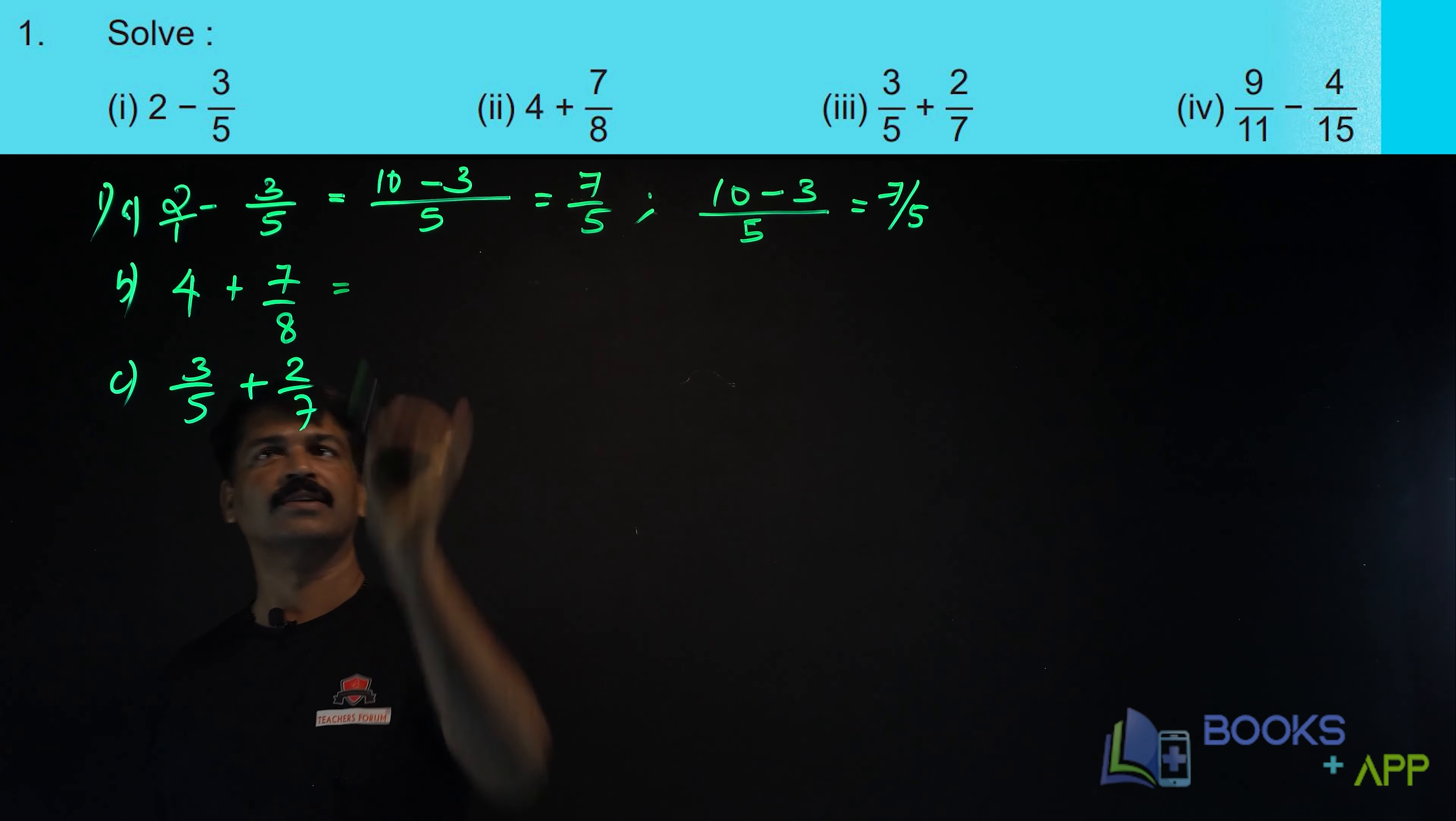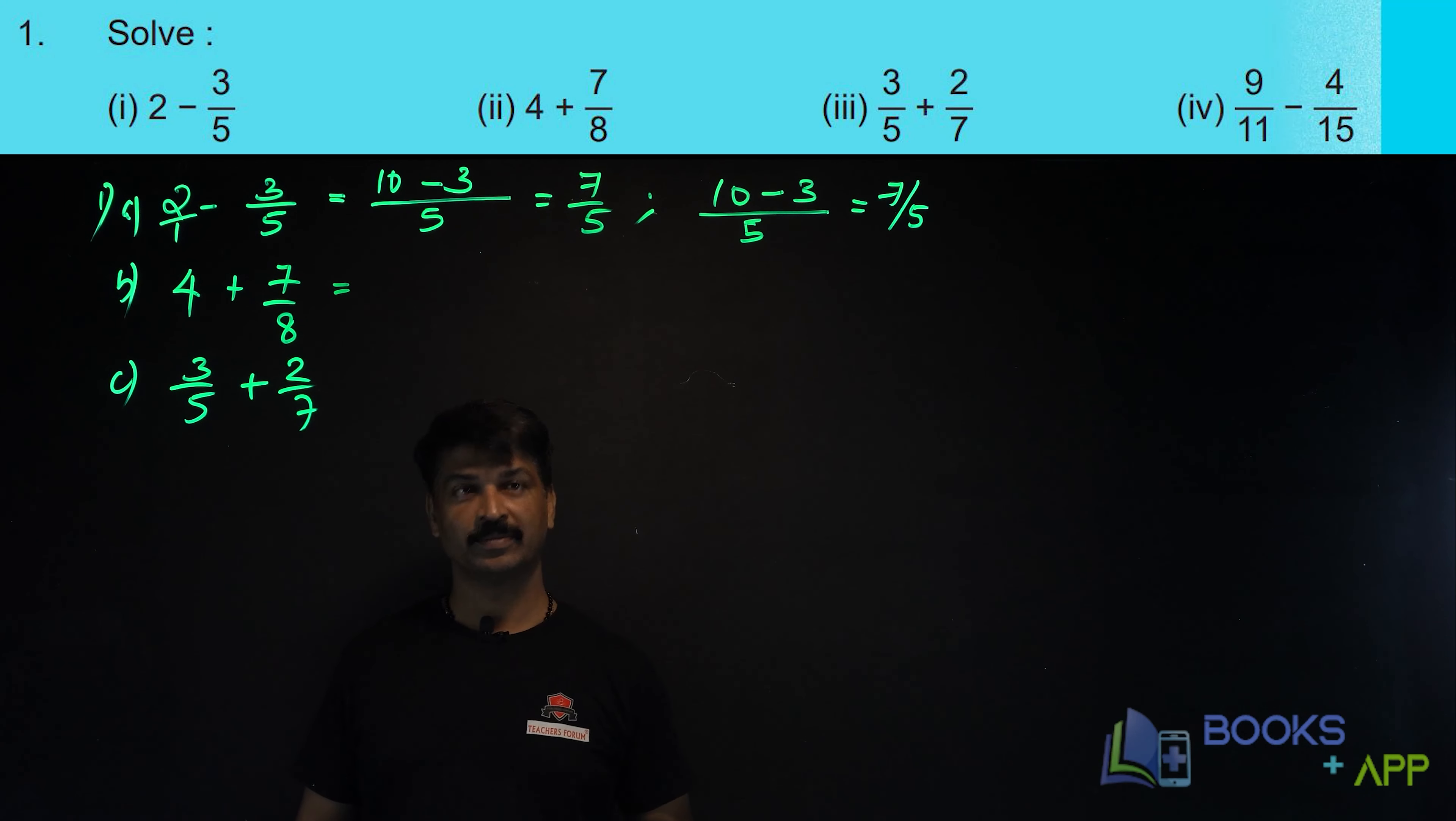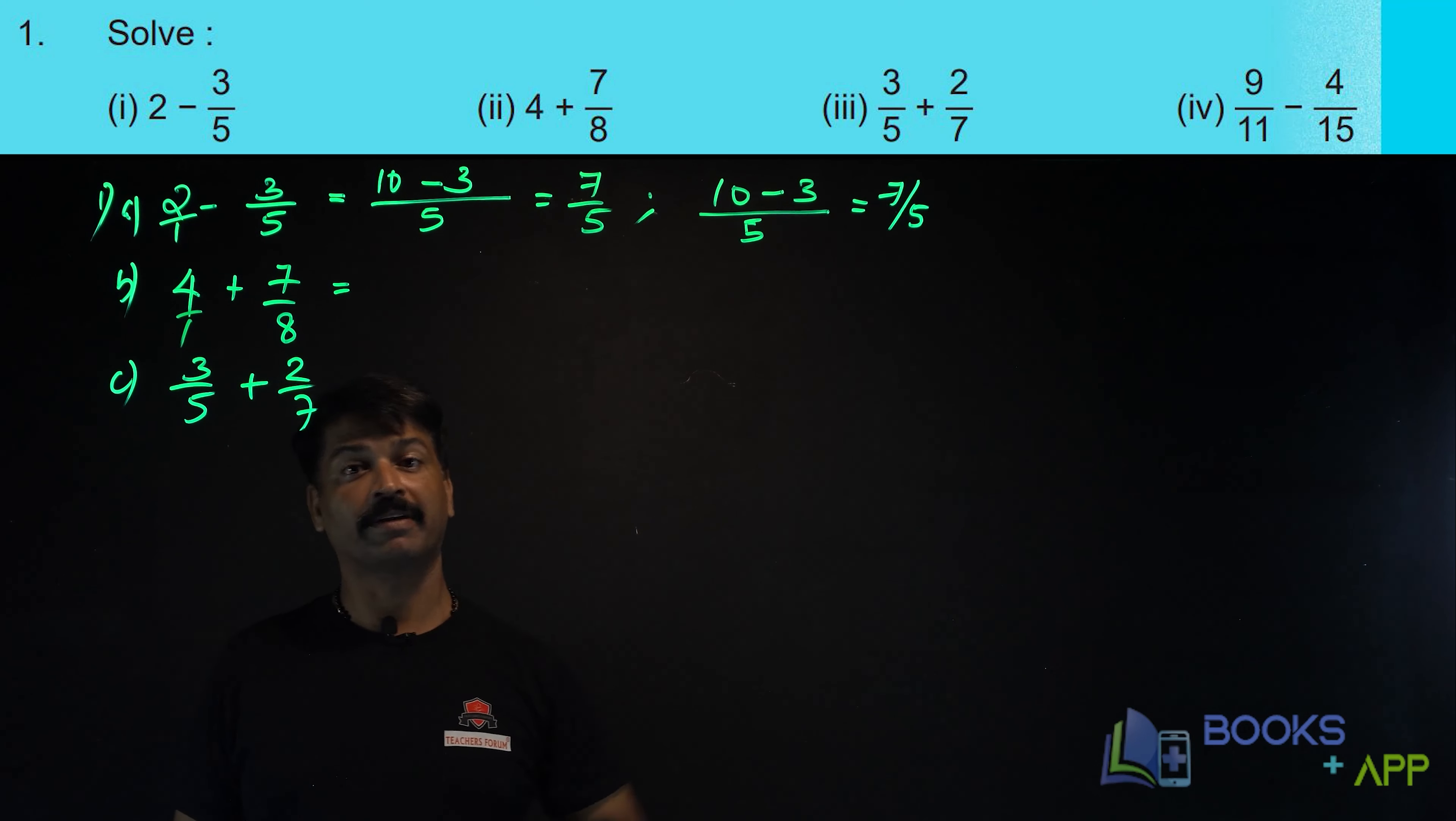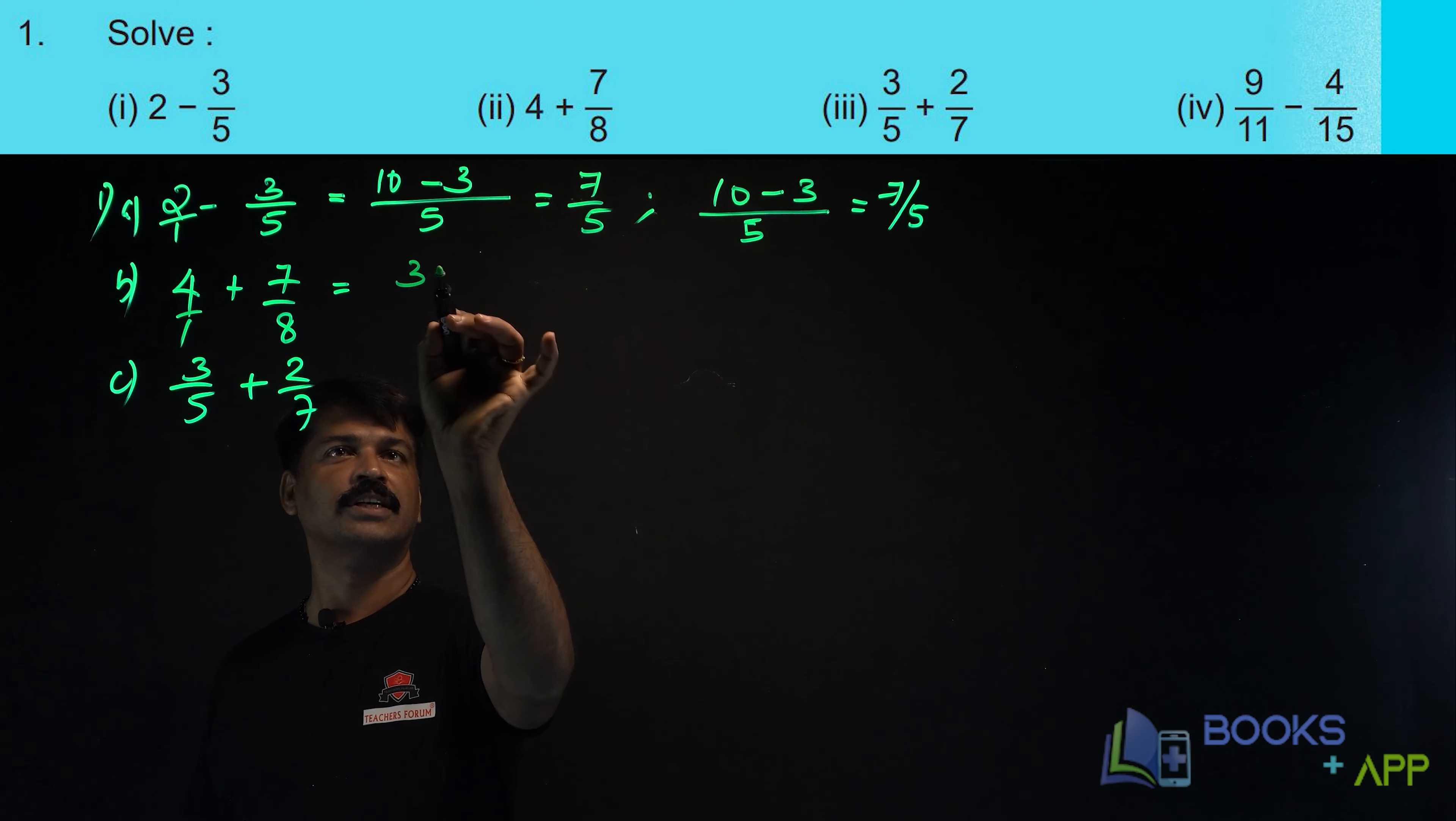Now, how can you do this one? 4 plus 7 by 8. Let us solve in this method, second method. I think that will be a little bit easier. How can you solve this? 4 means 4 by 1. 8 into 4, 32. If it is plus, you should put plus.